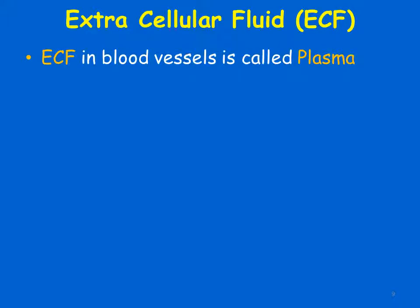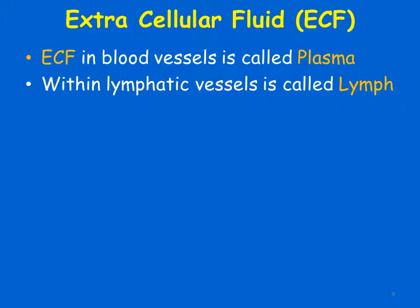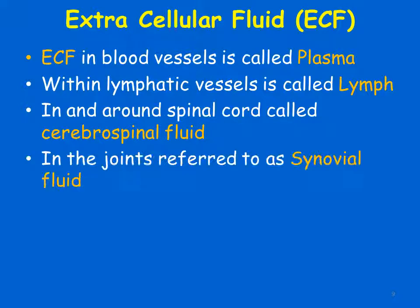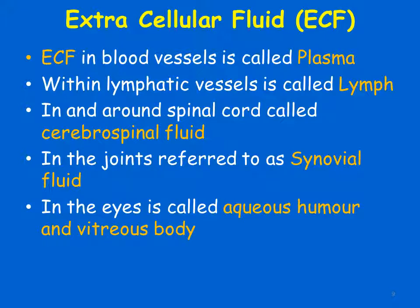The extracellular fluid is called by different names in different locations. ECF in the blood vessels is called plasma, while the same fluid in the lymphatic vessels is called lymph. In and around the spinal cord it is called cerebrospinal fluid, in the joints it is synovial fluid, and in the eyes it is called aqueous humor and vitreous body.